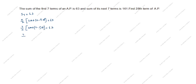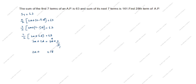Substituting n = 7: 7 by 2, open bracket, 2a plus 6d, equals 63. Rearranging: 2a plus 6d equals 63 into 2 by 7, which gives 18. So our first equation is: 2a + 6d = 18.